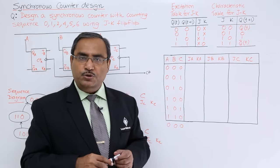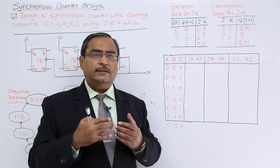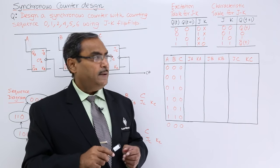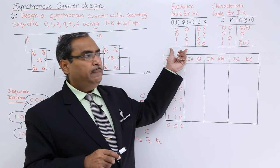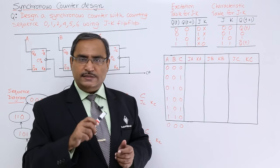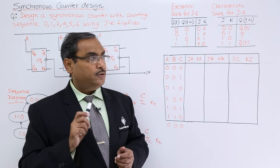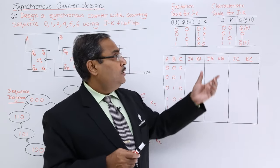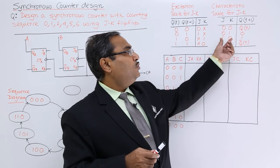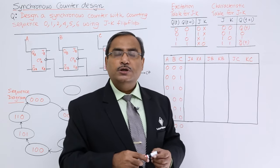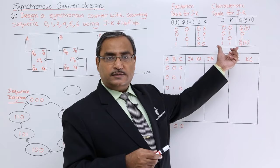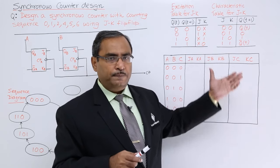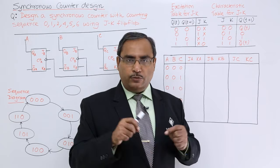Here we have QT (the previous output at the Tth instant) and QT+1 (the current output at T+1). The excitation table shows the required J and K values: for 0→0 it is 0x, for 0→1 it is 1x, for 1→0 it is x1, and for 1→1 it is x0. The characteristic table has J and K as inputs and QT+1 as output, giving: 0,0→QT; 0,1→0; 1,0→1; 1,1→Q̄T. If any other flip-flop is used, keep its respective excitation and characteristic tables on your answer sheet for reference.